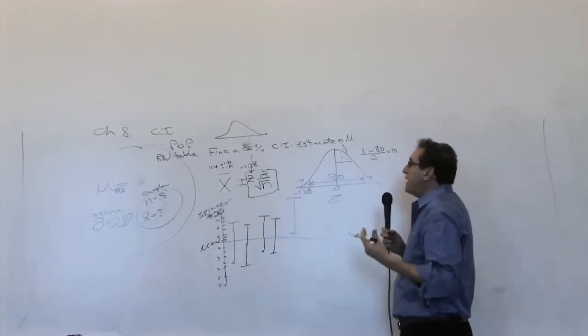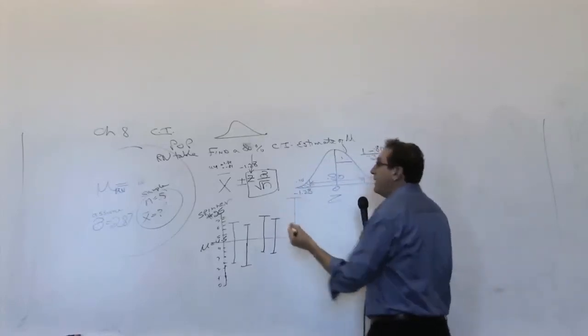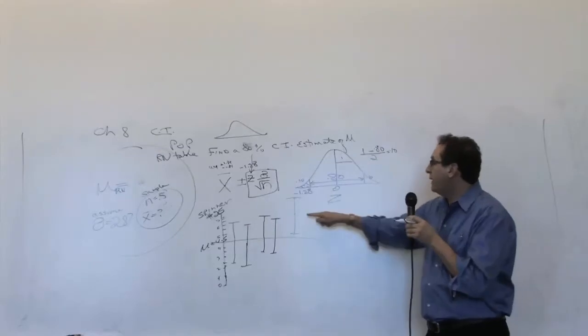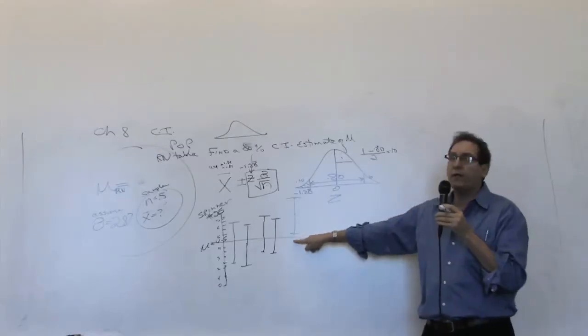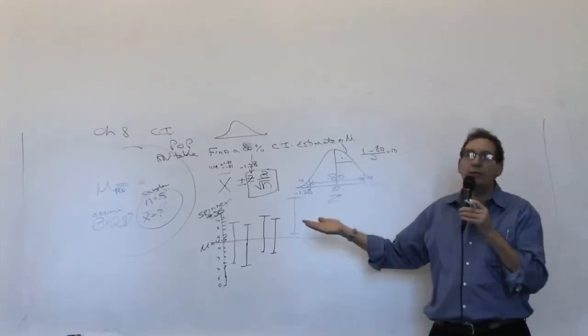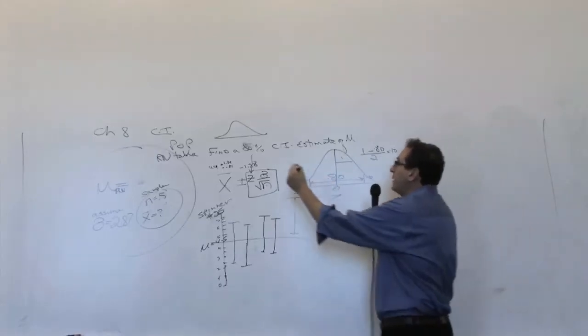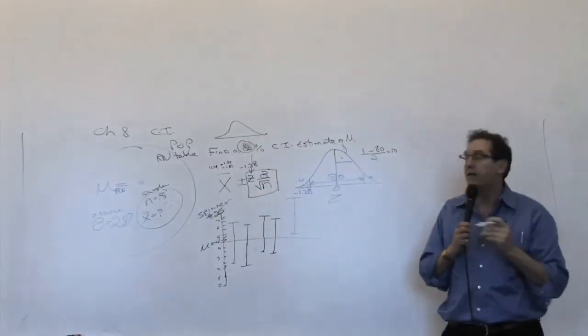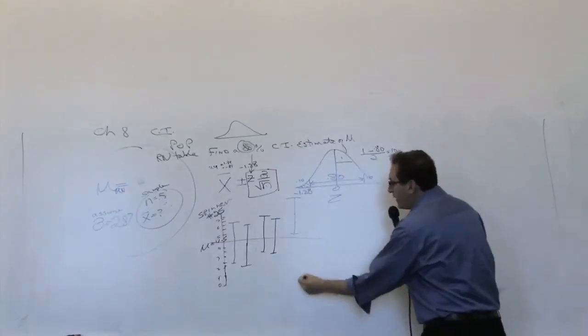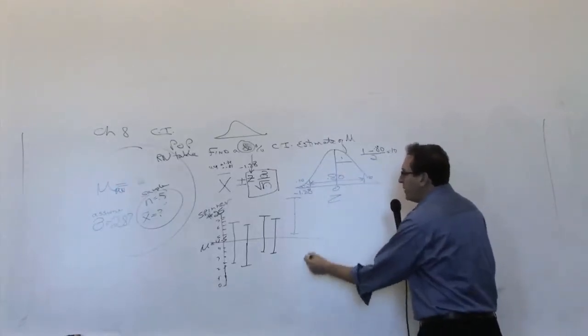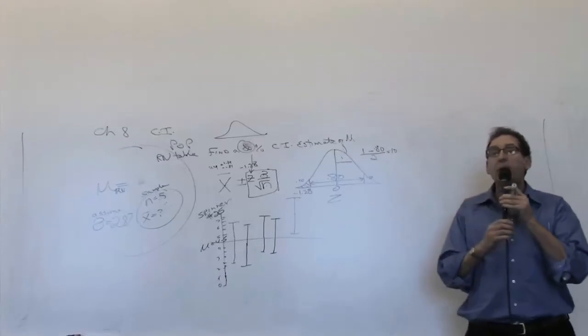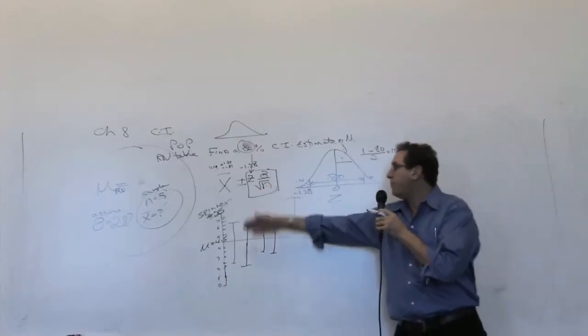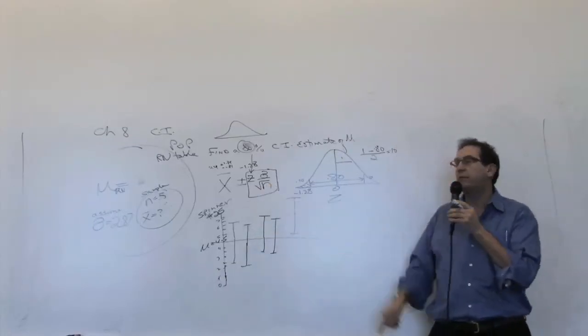That means that person, I'm 80% confident that it's between here and here. But that person would be wrong because the real answer is down here, 4.5. So the point is you're not going to be right 100% of the time. You'll be right 80% of the time. In other words, you're going to get four out of five, which is 80%, we'll get it right. And somebody might get an answer down here.